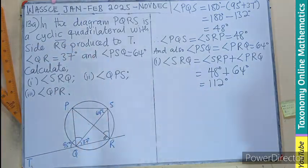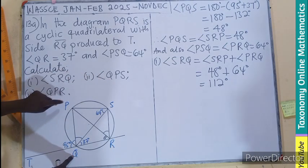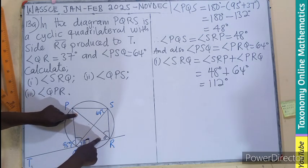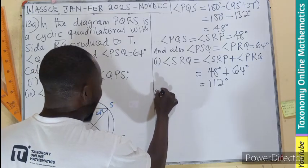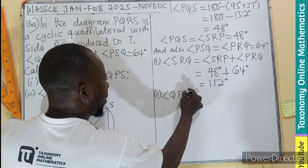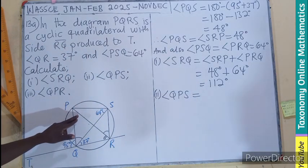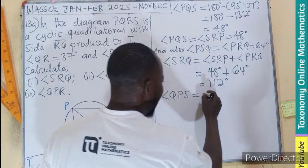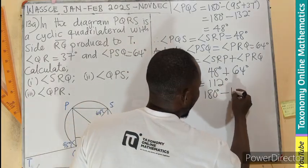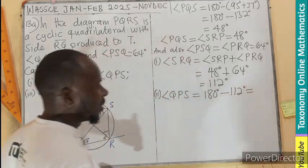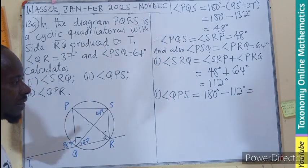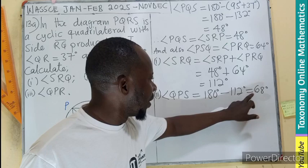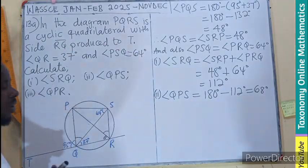The first one is 112°. Then for the second one, which is QPS, the whole of this is opposite to what we found. We can say that angle QPS equals 180° minus 112°, which gives us 68°.